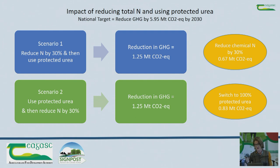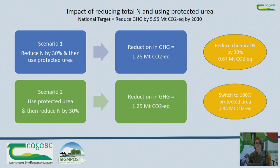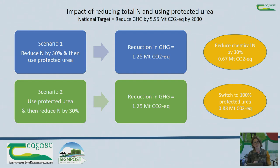All the data coming through in terms of production show that protected urea is delivering. The message is: switch to protected urea first and then drop chemical nitrogen use. That's the backdrop — nitrogen has the potential to take about 20 percent off that 25 percent target, and we have the technologies to do it. I'll now hand over to Deirdre Hennessy, whose presentation is titled 'Nitrogen Strategy and Clover Swards — What Does the Research Say?'